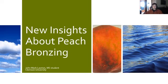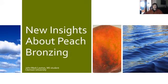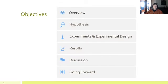Thanks for that introduction. My name is John Mark Lotton. I'm a master's student at Clemson University, and today I'll be presenting on my research, giving a little bit of information on new insights about peach bronzing. The presentation today will consist of an overview of what bronzing is and what we know to this point. We'll dive into the hypothesis that paved the way to our experiments, our experimental design, follow up with results from over the last two years, wrap it up with a discussion, and briefly talk about future studies.